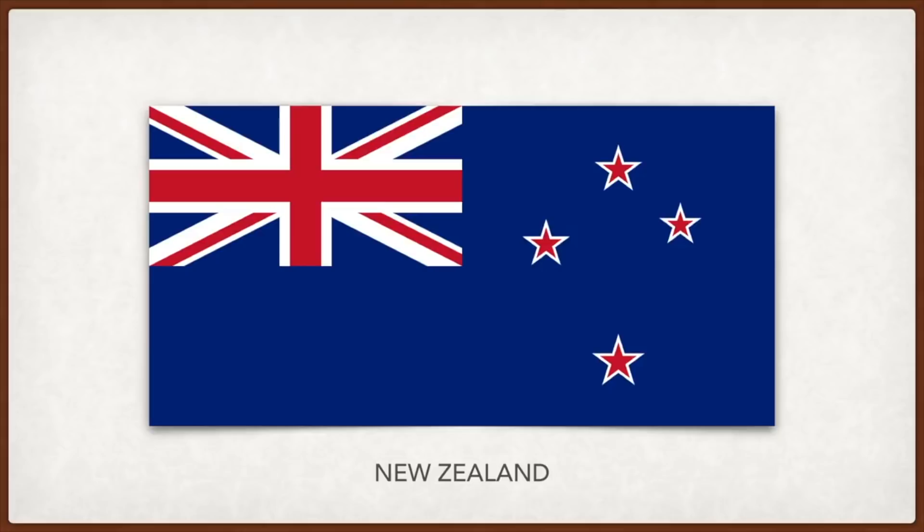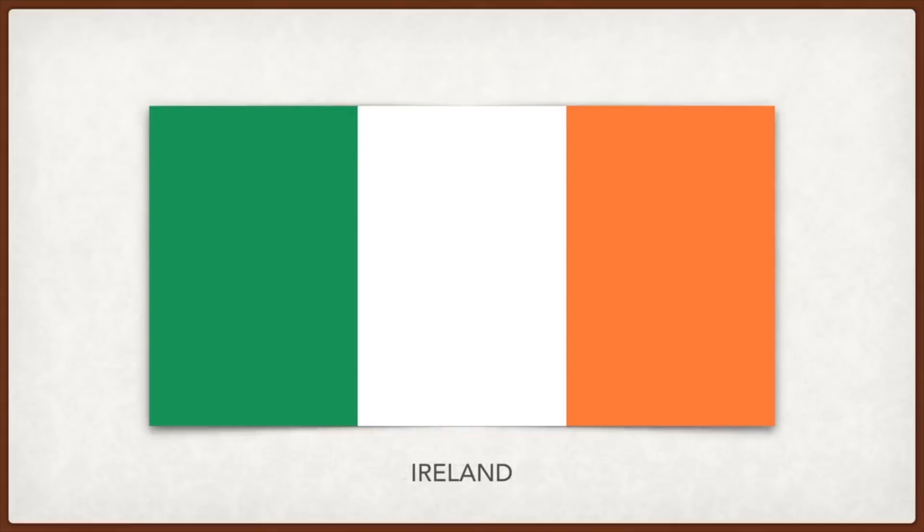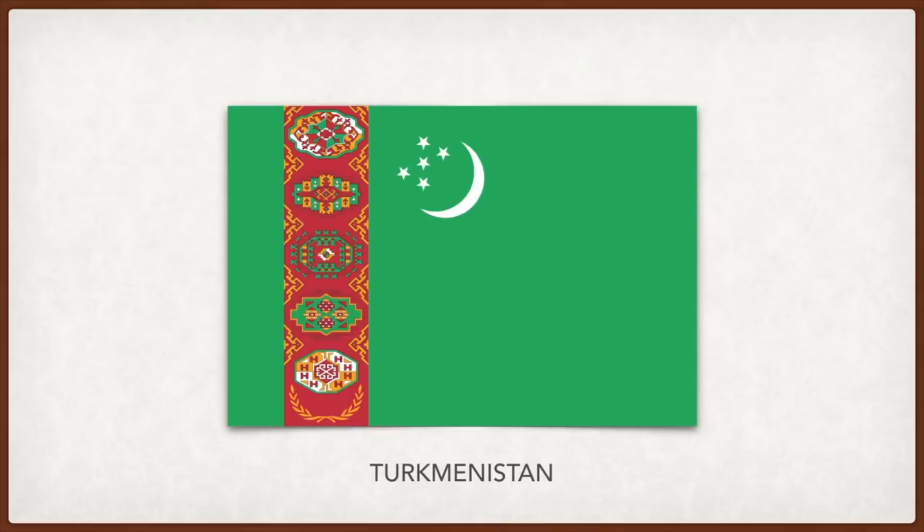Ireland: green stands for Irish republicanism, white for peace, and orange represents William of Orange and Protestants. Turkmenistan: the green symbolizes Islam, the white crescent stands for faith in a bright future, the five stars are for the five provinces, and the red stripe in the middle contains five elaborate designs bringing to mind the country's famous carpet industry, representing the five major tribes.